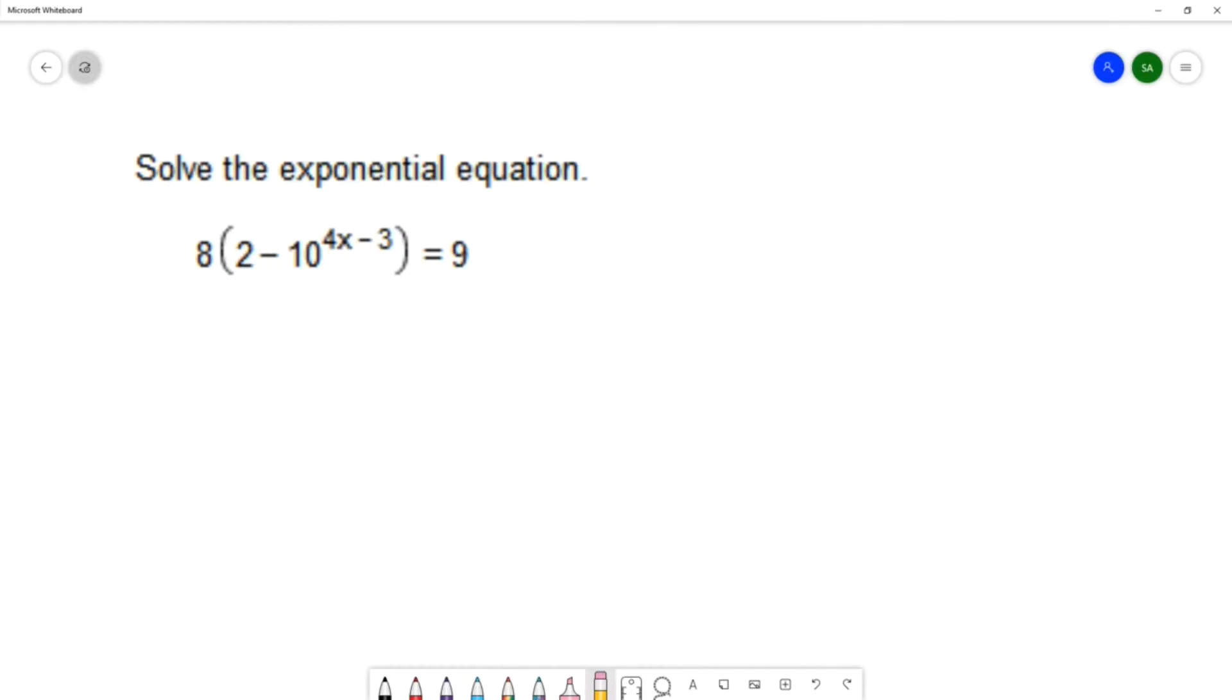When we solve exponential equations, we have three methods. We can make the bases the same: b to the u equals b to the v, so u equals v. That's called relating the bases or using the one-to-one property.